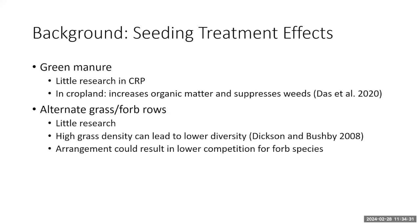We also know that how we seed might affect establishment success. We're looking at two treatments: green manure — there's been little research on this in CRP restoration specifically, but in croplands it can increase organic matter and suppress weeds — and the other approach is having alternate grass and forb rows. It's known that high grass density seeding can lead to lower diversity, so by arranging planting in alternating grass-forb rows we hope to reduce competition on forb species and ultimately achieve higher diversity plantings.